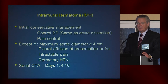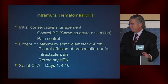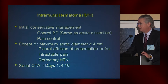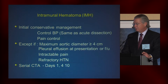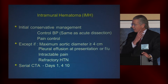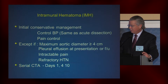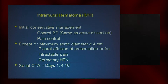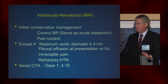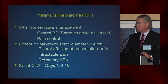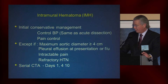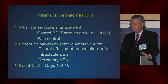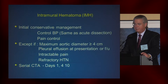The initial management is very similar to aortic dissection — it is conservative, implying control of blood pressure, usually with beta blockers initially, and pain control. This conservative management applies except if the maximum aortic diameter is greater than 4 cm, in which case rupture can occur; if there's a pleural effusion at presentation, which implies some degree of seepage from a very thin outer layer; and in patients with intractable pain and refractory hypertension — though it can be difficult to define intractable and refractory.